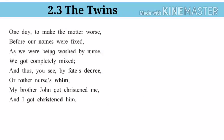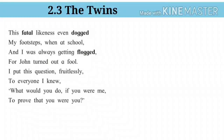Now let's see the third stanza. 'This fatal likeness even dogged my footsteps when at school, and I was always getting flogged, for John turned out a fool. I put this question fruitlessly to everyone I knew: What would you do, if you were me, to prove that you were you?'